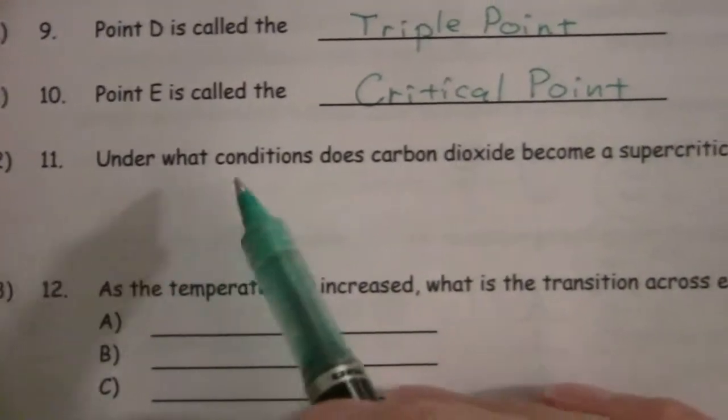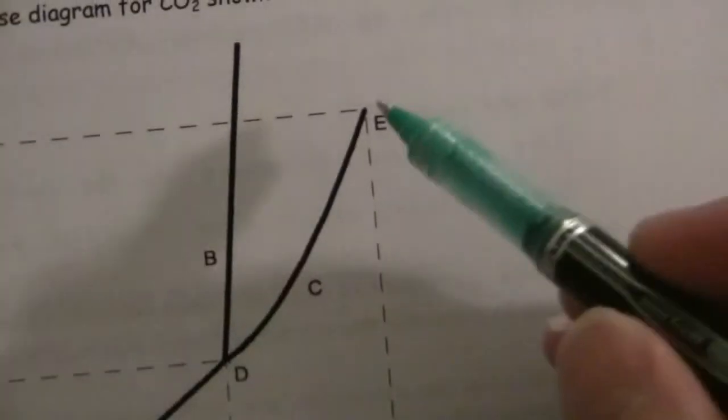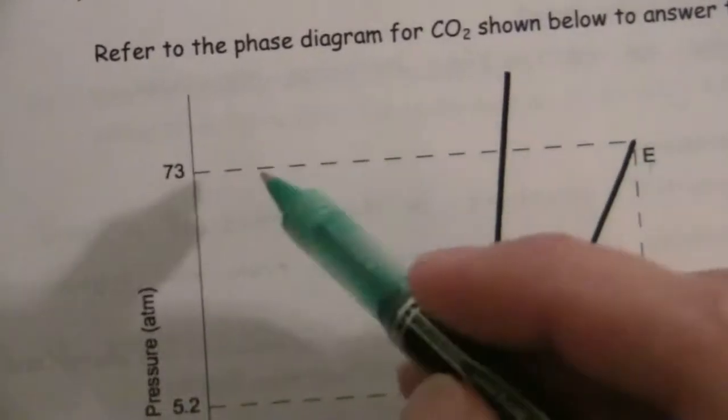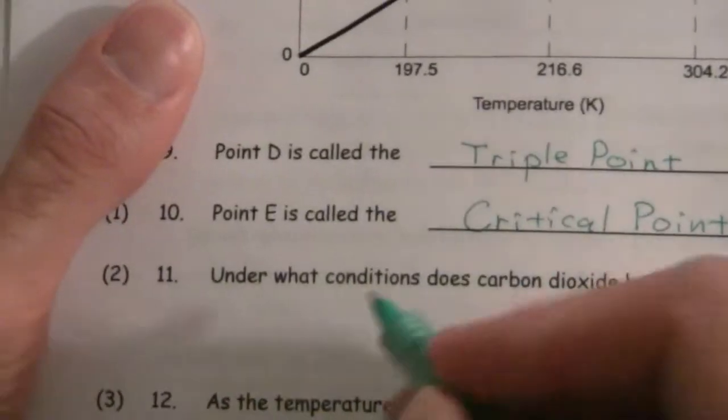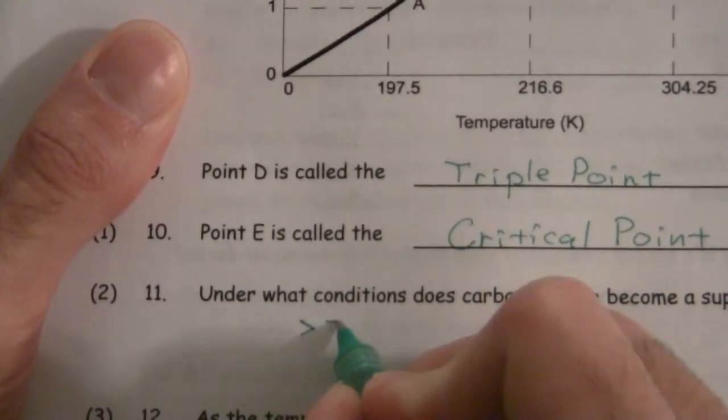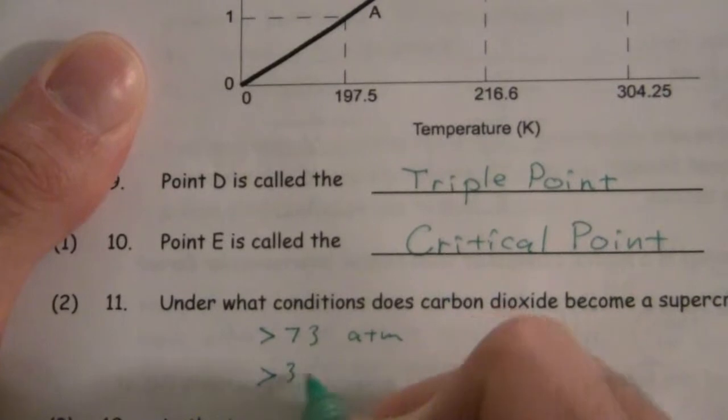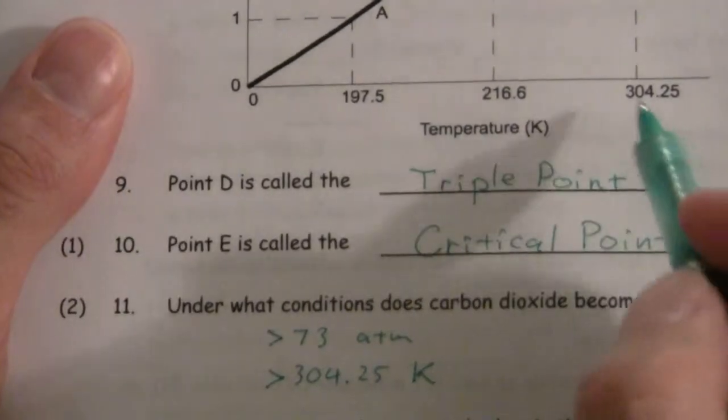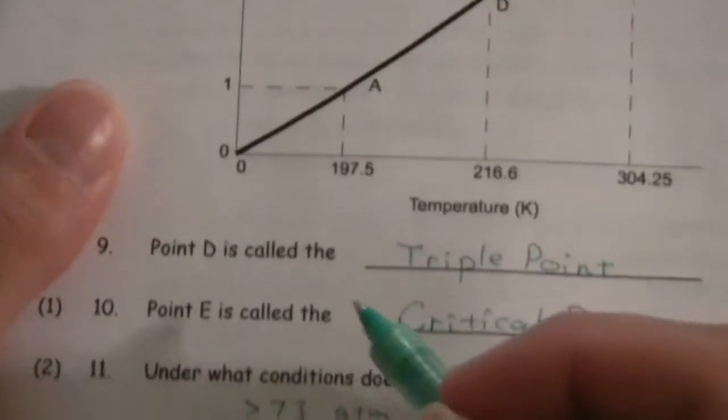Number 11, under what conditions does carbon dioxide become a supercritical fluid? So here's the critical point, the supercritical fluid is above this pressure, 73 atmospheres, and above this temperature, 304.25 degrees. So, we could just say greater than 73 atmospheres, and greater than 304.25, this would actually be Kelvin.